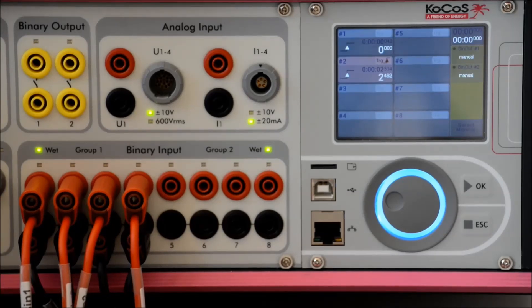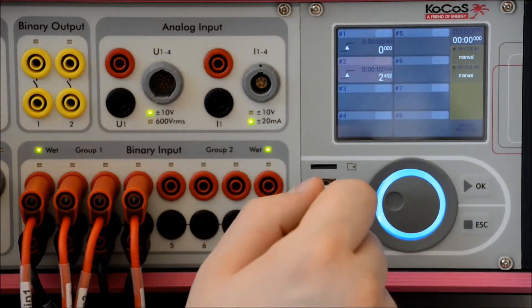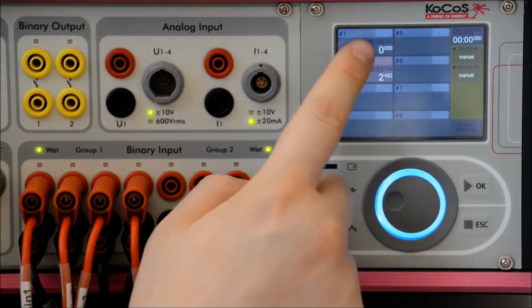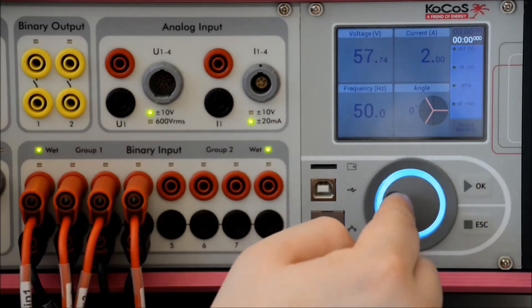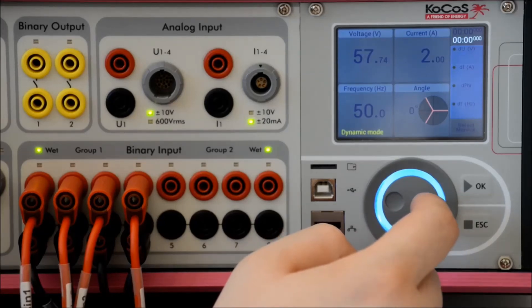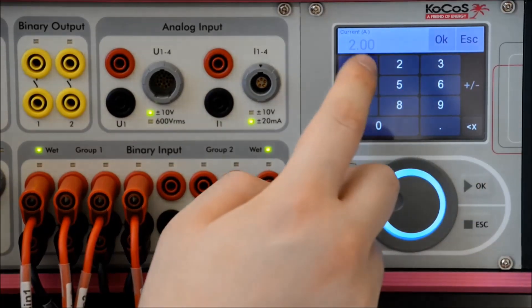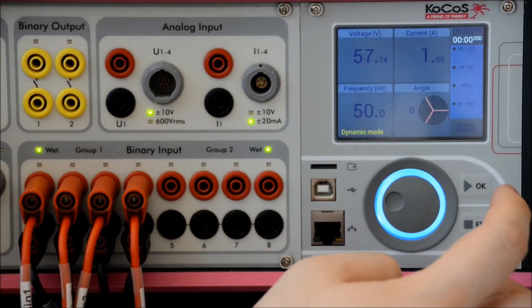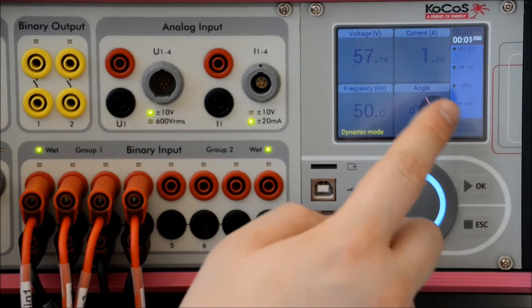To test an excitation, you can use another method. Now, I deactivate the trigger for tripping and activate it for pickup. With this and our dynamic mode, I can easily test a pickup value. So, setting the current back to 1 amp, start my output and I am in dynamic mode.